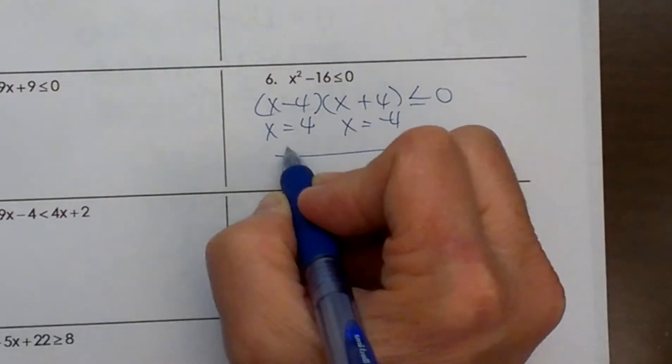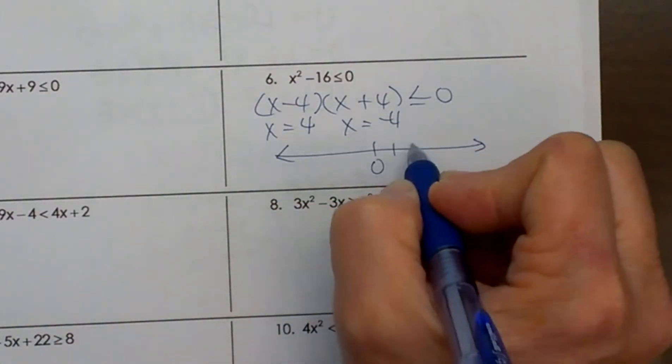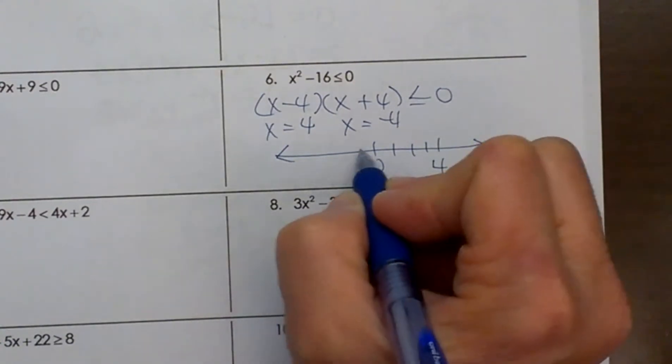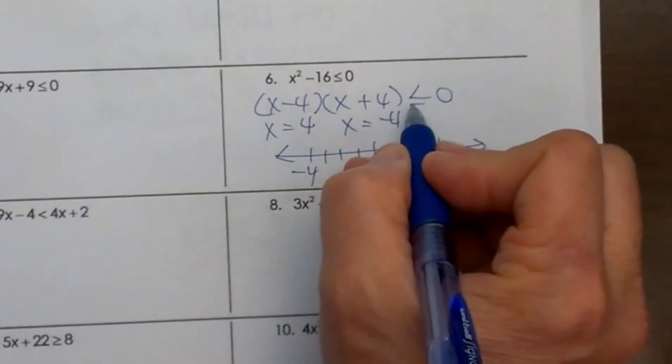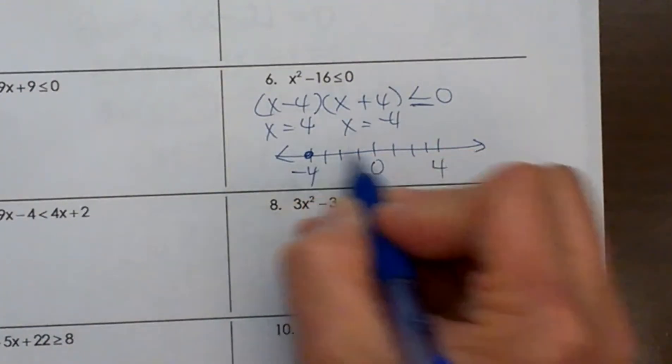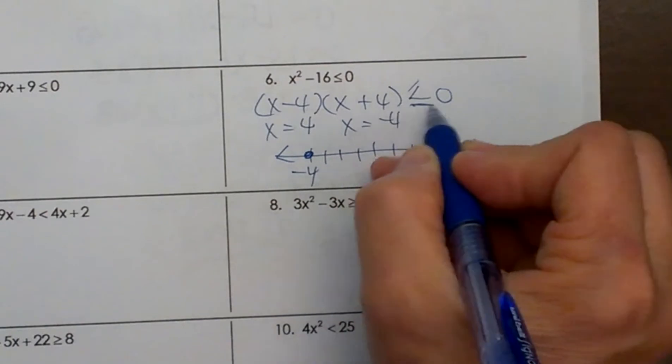So let's draw our number line. Here is 0. 1, 2, 3, 4 is here. 1, 2, 3, 4. Negative 4 is here. These two this time are closed circles because it is less than or equal to.